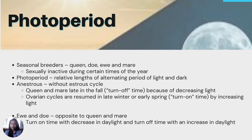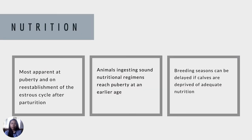For seasonal breeders like queen, doe, ewe, and mare, they are sexually inactive during certain times of the year. The photoperiod is the relative length of alternating periods of light and dark. Anestrus without an estrous cycle occurs in queen and mare late in the fall — turn-off time — because of the decreasing light. Ovarian cycles resume in late winter or early spring — turn-on time — by increasing light. The ewe and doe are the opposite: their turn-on time is with a decrease in daylight. Nutrition is most apparent at puberty and on reestablishment of the estrous cycle after parturition. Animals on sound nutritional regimens reach puberty at an earlier age.